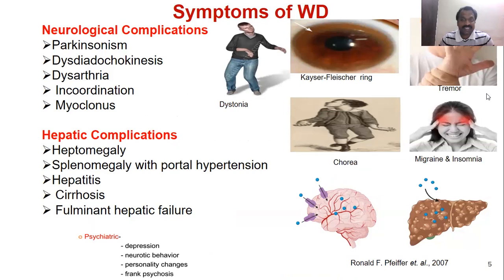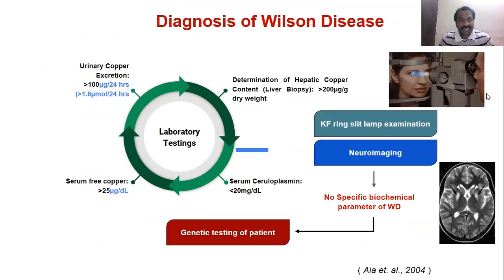There are different biochemical methods available to diagnose Wilson disease, including measurement of urinary copper excretion, measurement of serum free copper level, determination of hepatic copper content, and serum ceruloplasmin level measurement. However, these biochemical parameters are not reliable because they can overlap with other liver diseases. That is why genetic testing is important.